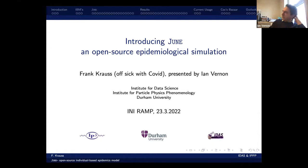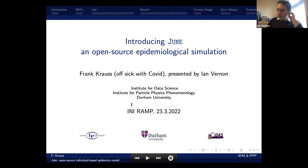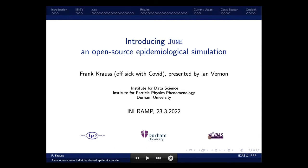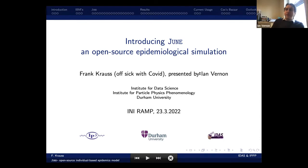Thank you very much for the invitation. As has been said, Frank Krause would have been speaking and giving this talk, but he's quite poorly with COVID at the moment. Hopefully nothing too serious, but it doesn't seem so great. So my name's Ian Vernon. I'm a Bayesian statistician from Durham University, and I'm going to talk about the DUNE model and things we've learned over the last couple of years involved in the RAMP project.